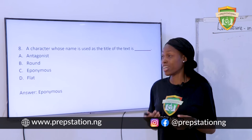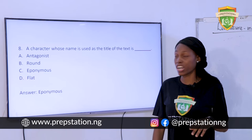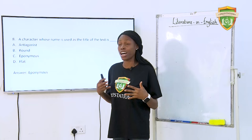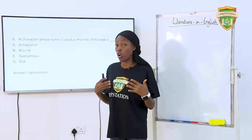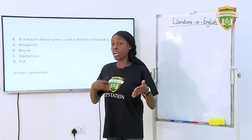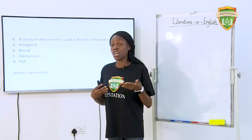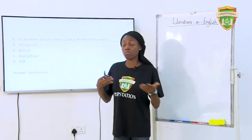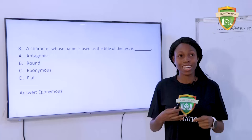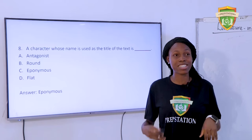A character whose name is used as the title of the text is — A. An antagonist. B. A round character. C. An eponymous character. D. A flat character. The answer is an eponymous character. Eponymous characters occur when the title of the book relates to the major character — for example, Daniel Defoe's Robinson Crusoe, or Thomas Hardy's Mayor of Casterbridge and Moll Flanders.